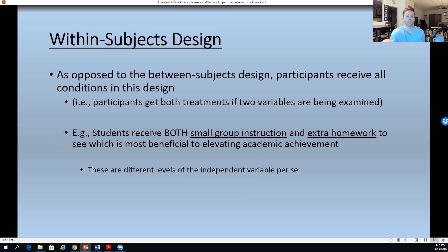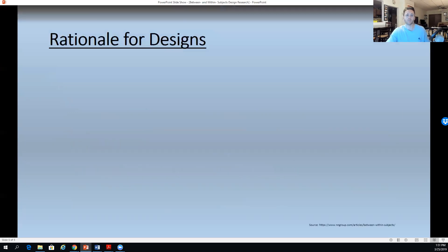And this would be what is often known in certain research, such as this book from Huck right here, as different levels. So the different levels of the independent variable here that are trying to lead towards academic achievement.